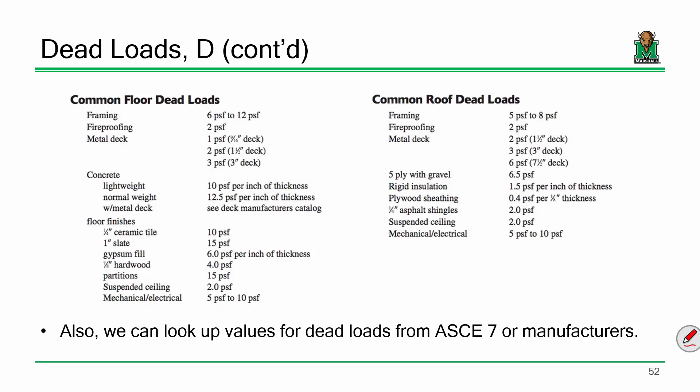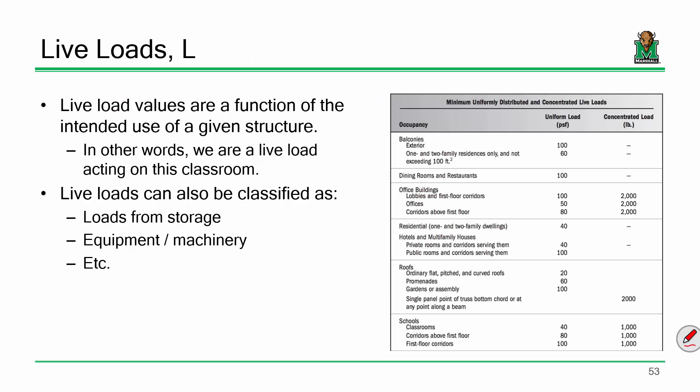If you're looking for dead loads in a building, one way is to look it up in ASCE 7 — it's just tables and tables of this stuff. Another possibility is to just call the manufacturer. If you're designing this building and want to know how much the carpet weighs, call the manufacturer and ask them — it's usually listed in catalogs anyway. Dead load just is what it is; it's just calculating self-weight, and there's no magic formula — just densities and volumes.